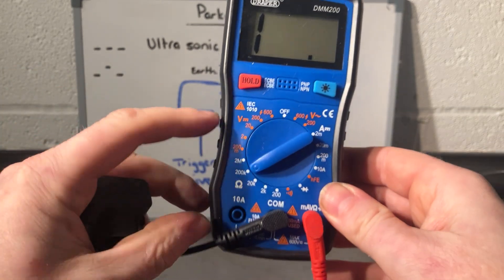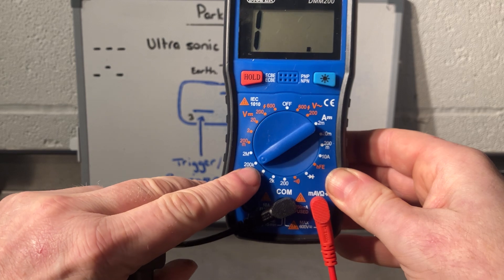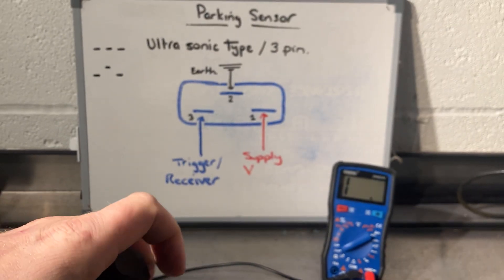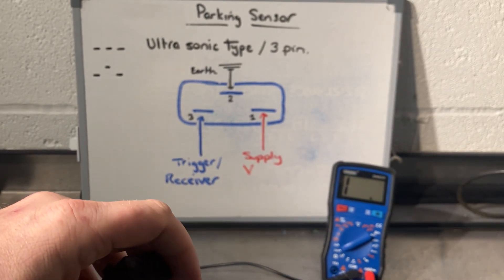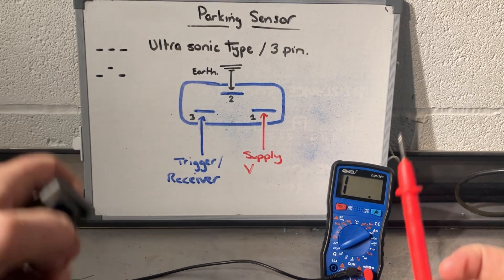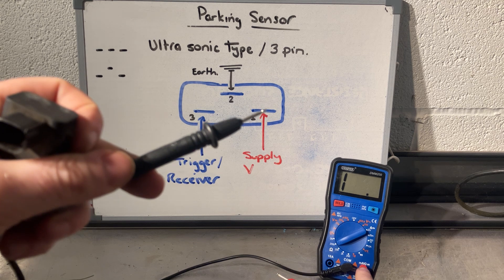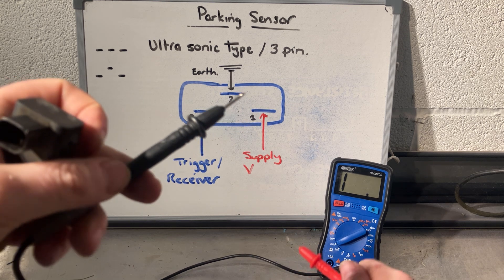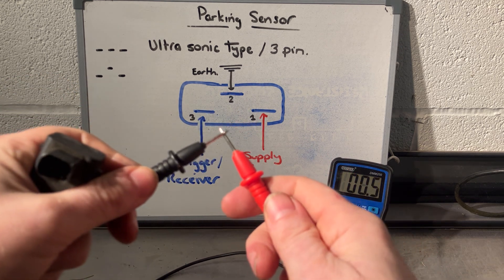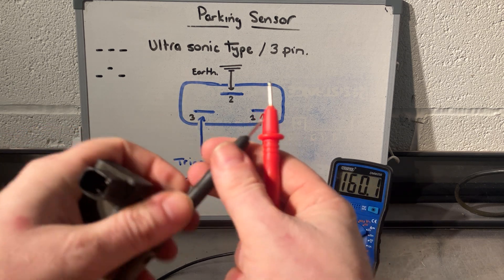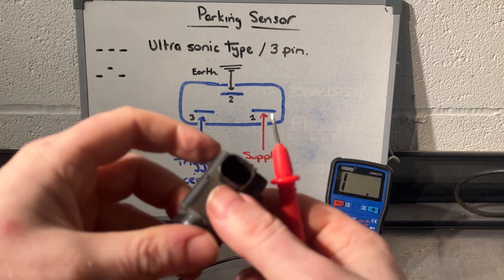I've got my multimeter and I've set it to ohms, and I've set it to 200K, so it's quite high resistance in this sensor anyway even when they're working properly. I've got my two leads. I've obviously got the black one in the com and the red one in the one that's got the ohm sign on it as well. Always a good idea to cross your multimeter probes just to make sure it's zeroing and it's calibrated, which it is.